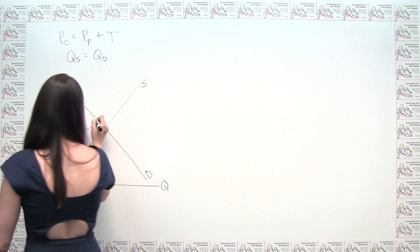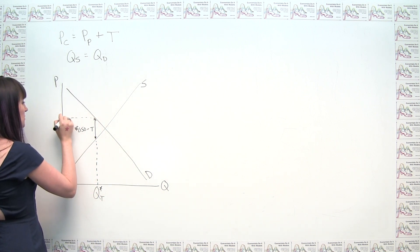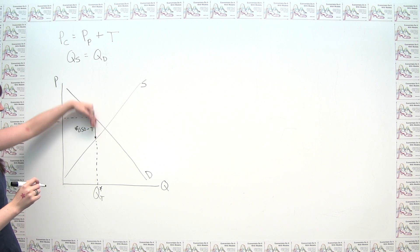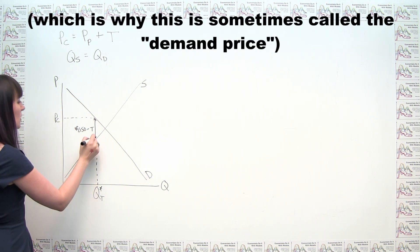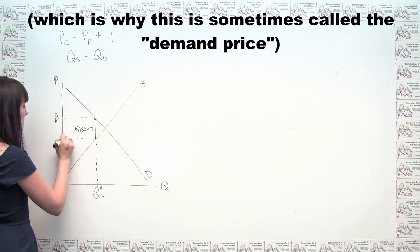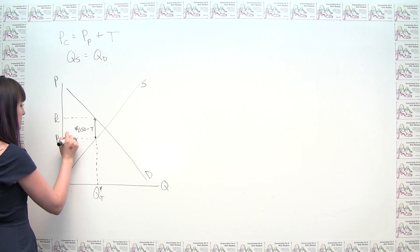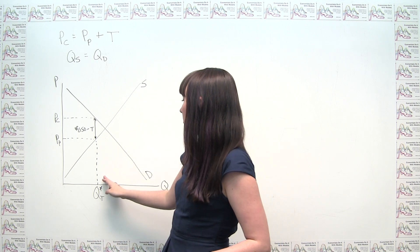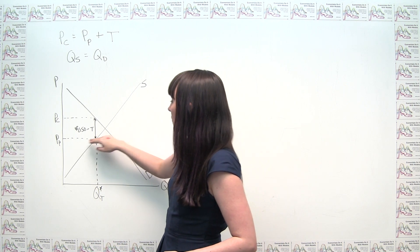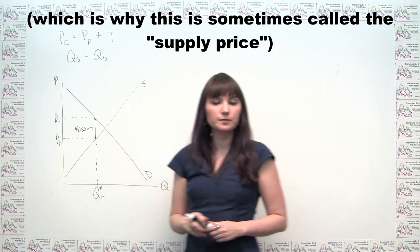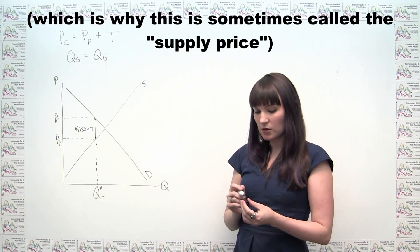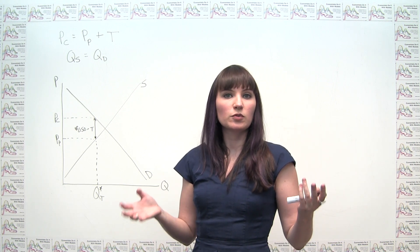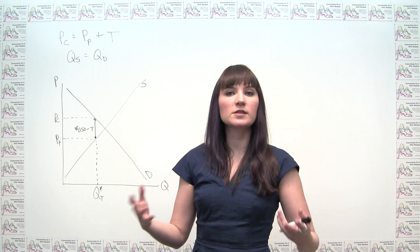We can also label the price to the consumer — that corresponds to Q star sub T on the demand curve — and the relevant price for the producer, at that same quantity where it intersects the supply curve. This is going to be true regardless of whether the tax is imposed on consumers or producers, under a certain set of assumptions.